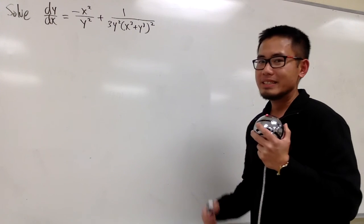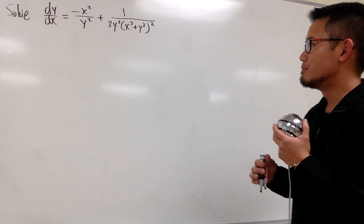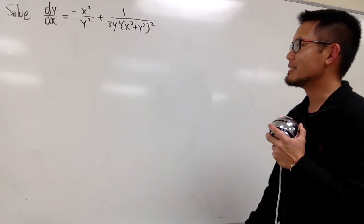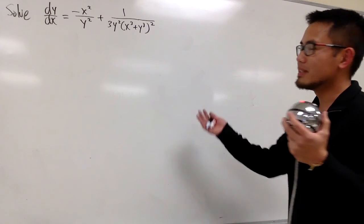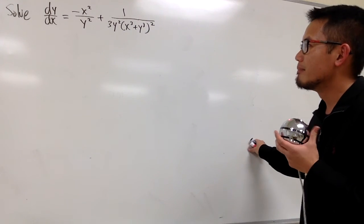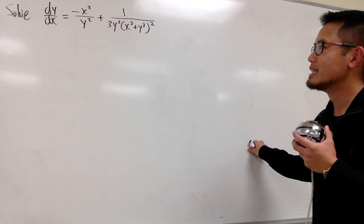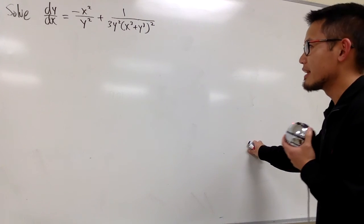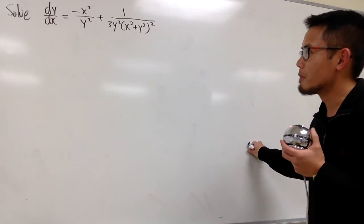It's not linear for sure, it's not Bernoulli's, right? It's not, I'm not sure if it's exact, you can check that. I'm not even sure if it's homogeneous. It's definitely not separable, right?